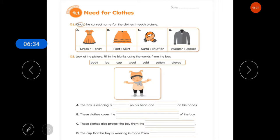Is this dress or t-shirt? Yes, this is dress, so we will circle dress. Next one is skirt. And next one is muffler. And next one is jacket. Clear?